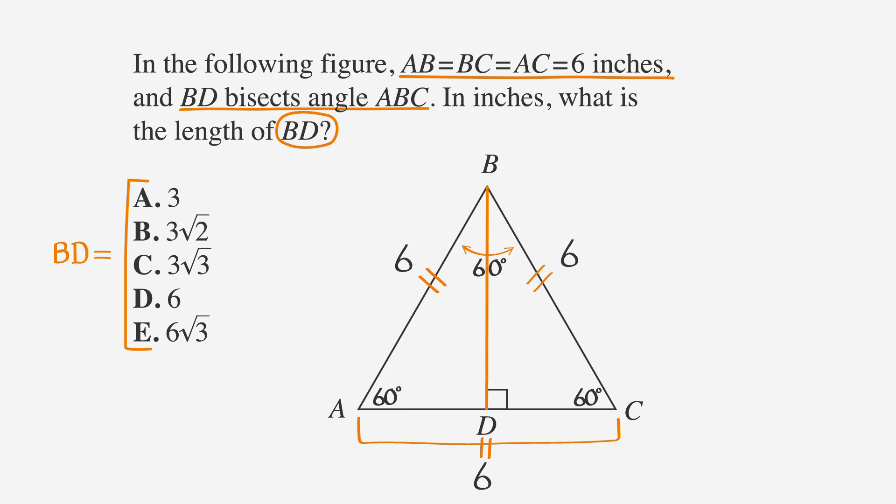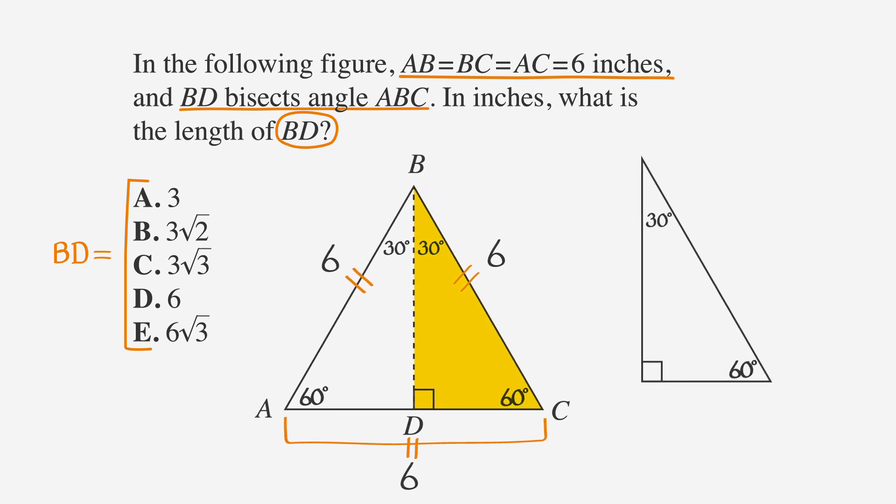Since angle ABC is 60 degrees, angle ABD is 30 degrees, and angle CBD is 30 degrees. That means that triangle DBC is a 30-60-90 triangle. Let's write in the formula for this type of triangle.